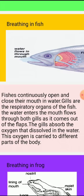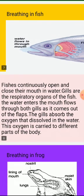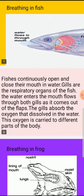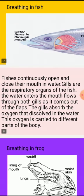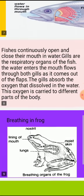When water enters the fish's mouth, the dissolved oxygen is diffused into the bloodstream, and at the same time carbon dioxide is also released into the water. So the gills are the respiratory organs of fishes.